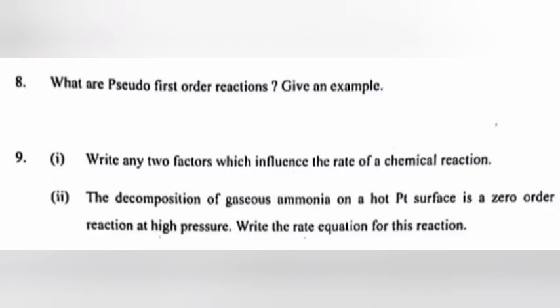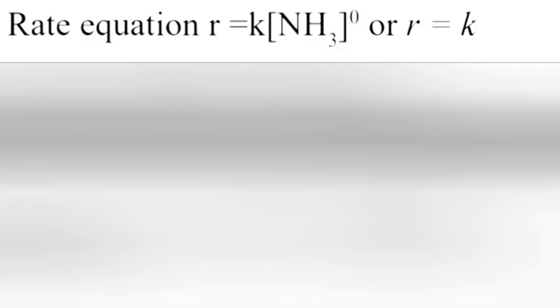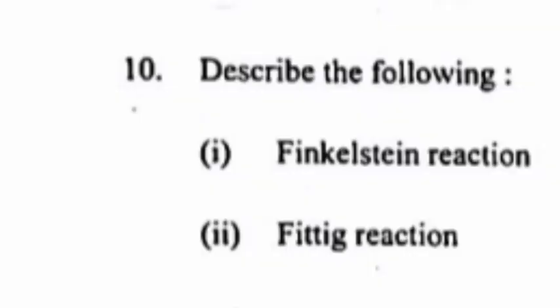Question 9 Part 2: The decomposition of gaseous ammonia on a hot platinum surface is a zero order reaction at high pressure. Write the rate equation for this reaction. Answer: Rate equation r = k[NH₃]⁰, or r = k.